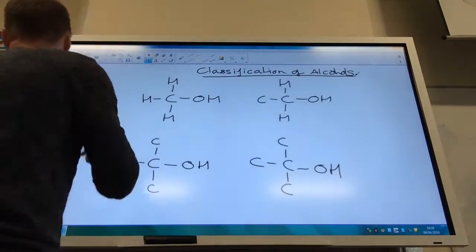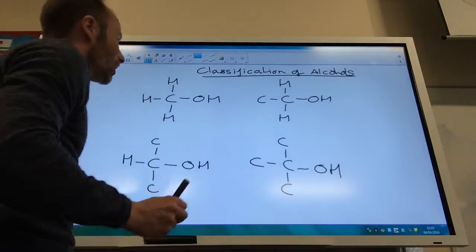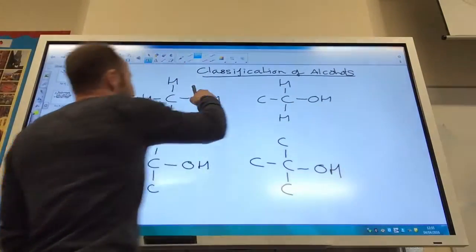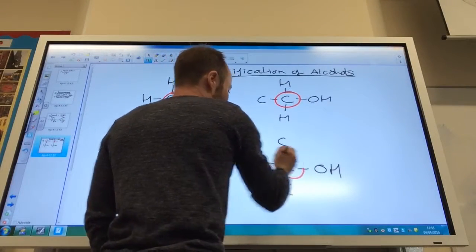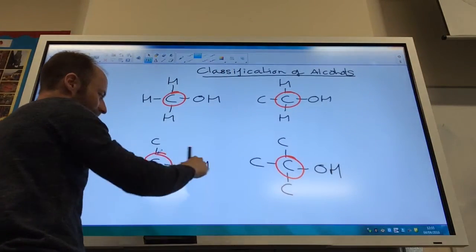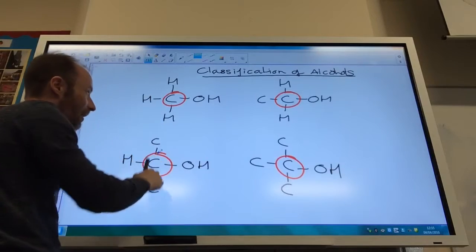Now it's dead easy to do, all you have to look is you look at the carbon which the OH group is attached to. So look at this carbon here, identify where your alcohol group is and then look at that carbon there.